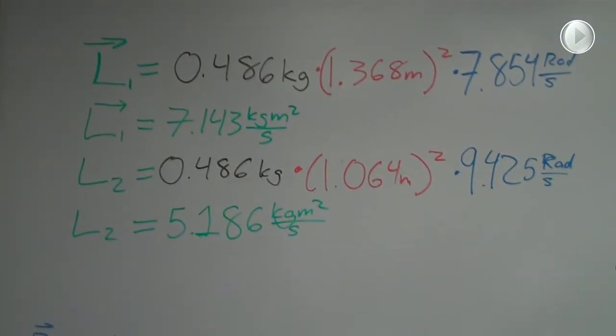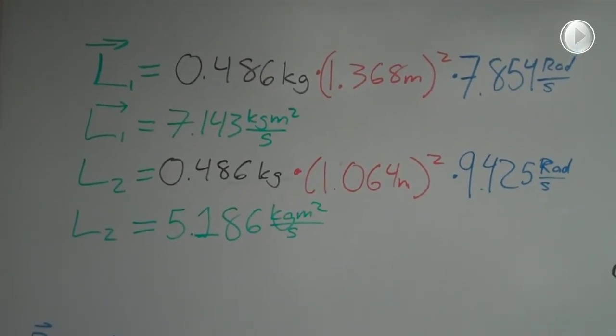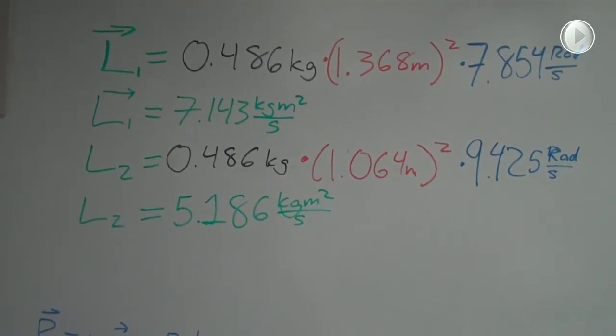Here, we have our calculations, and the discrepancy you see with L1 and L2 is due to collisions and friction. Even though the tetherball lost momentum, the velocity went up due to the change in radius.